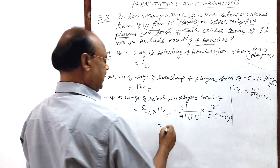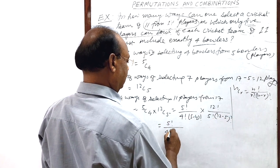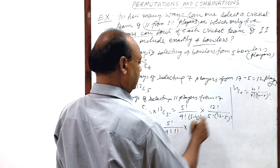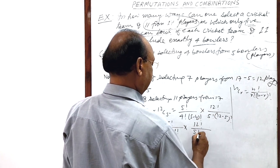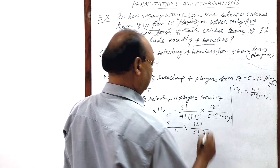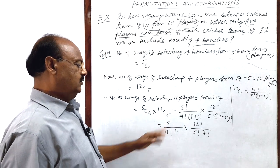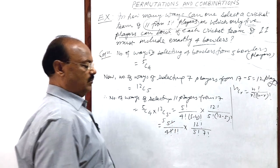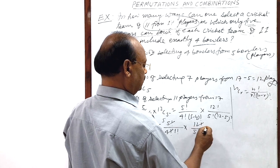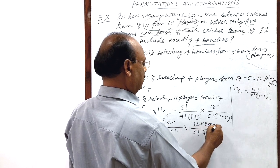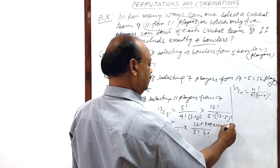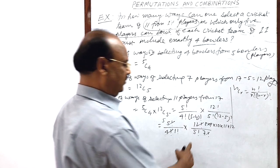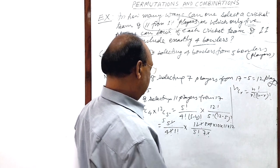And we have to now simplify it. This is 5 factorial by 4 factorial into 1 factorial. You know 1 factorial is 1. Here 12 factorial divided by 5 factorial into 7 factorial. So this 4 factorial will be cancelled out. Here we will get 5. And similarly, 7 factorial will be cancelled out here. So this is 8 into 9 into 10 into 11 into 12. You can understand it very easily. And 5 factorial is 1 into 2 into 3 into 4 into 5.